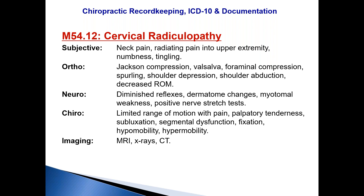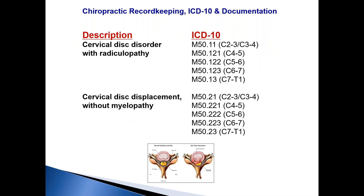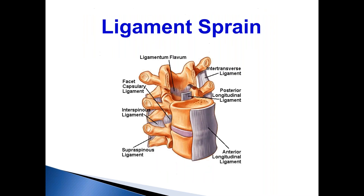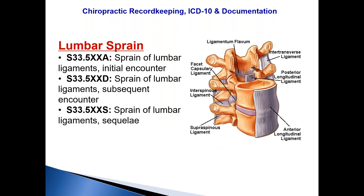Disc disorders and disc displacements are terrific diagnosis codes, but you need an MRI or CT for these — you need imaging. Sprains are very good and are also considered long-term treatment diagnosis codes. In auto accidents, patients typically had sprained ligaments and strained muscles — it was both.